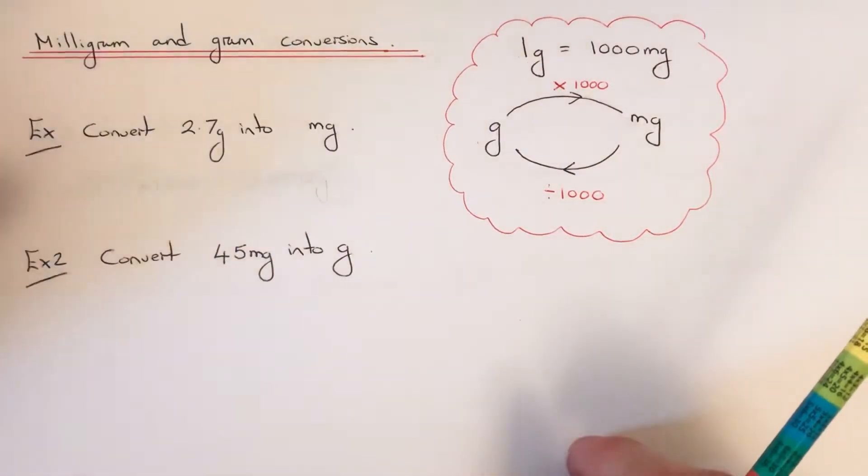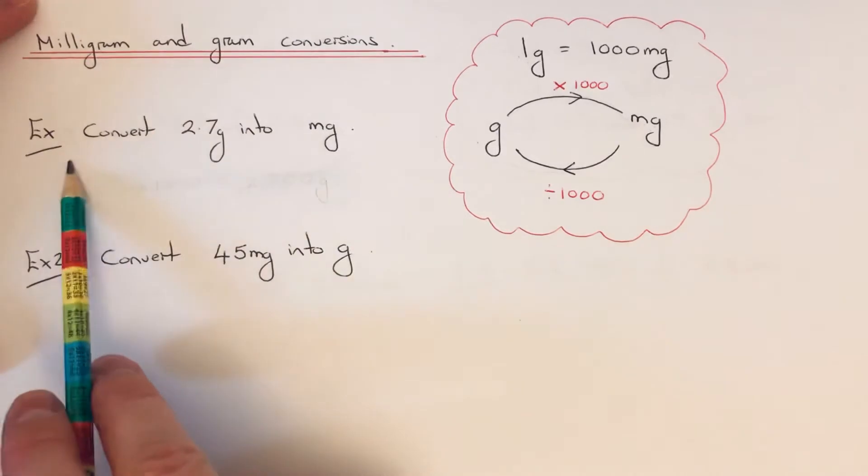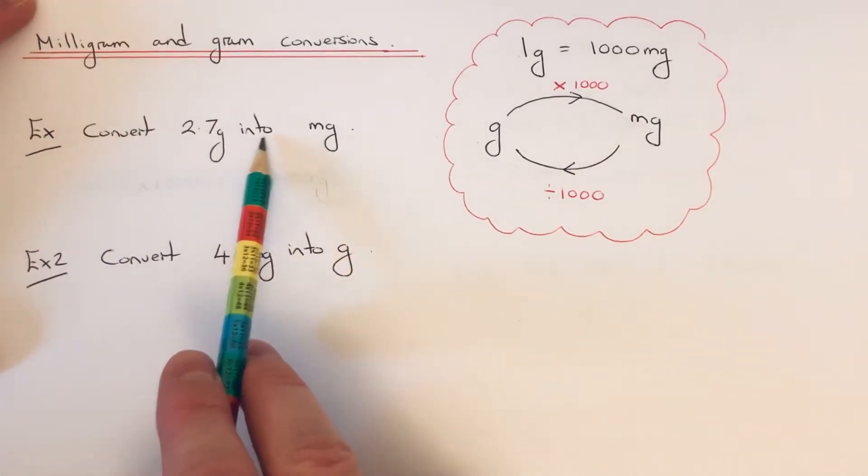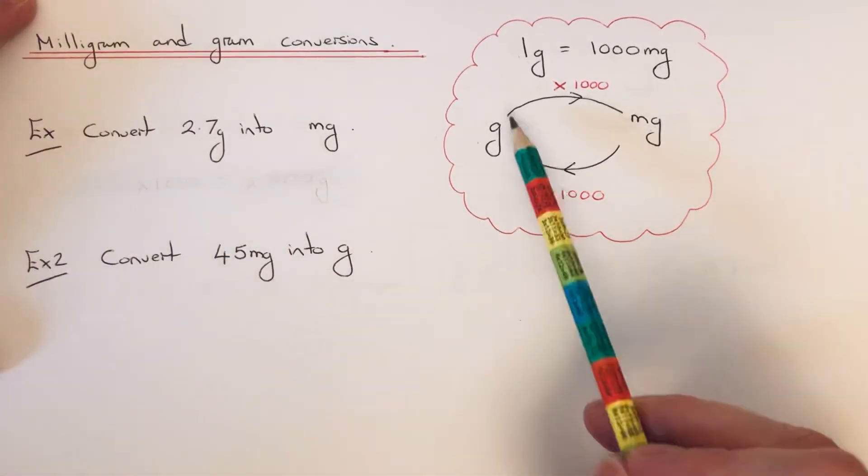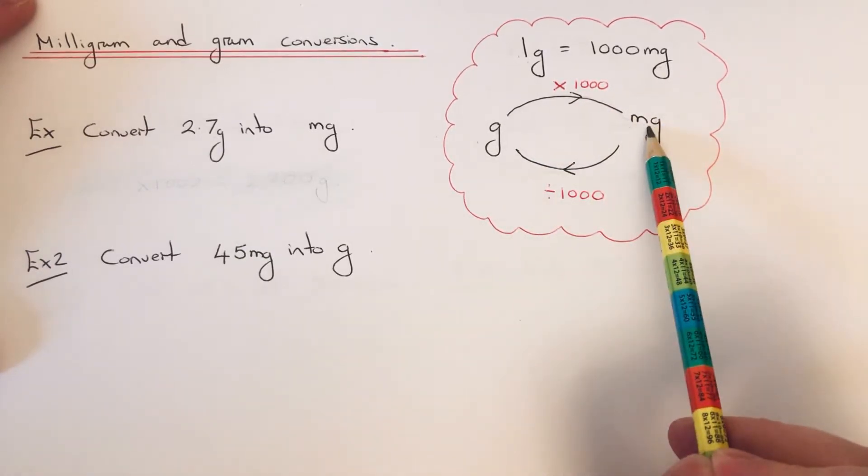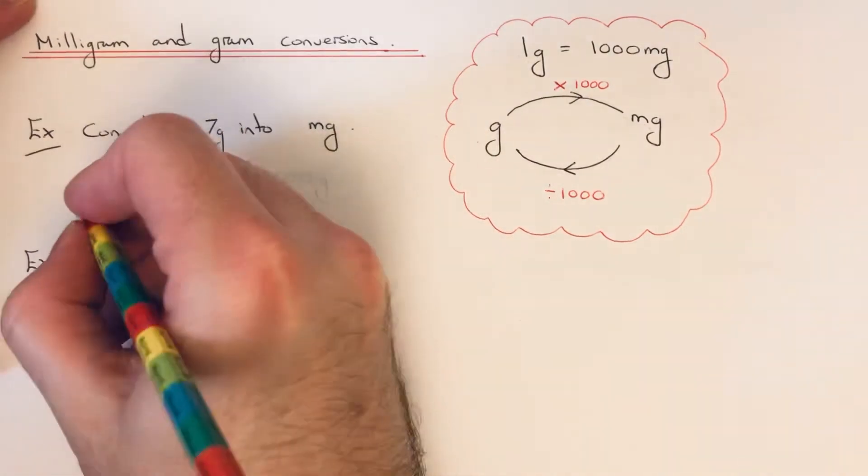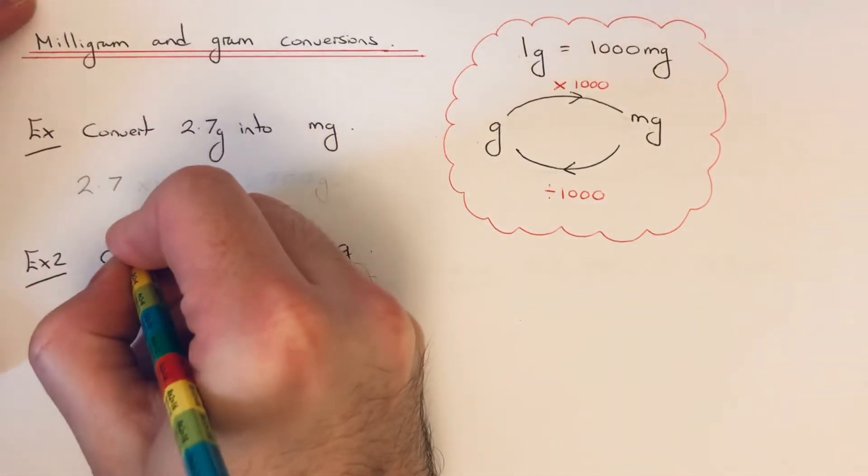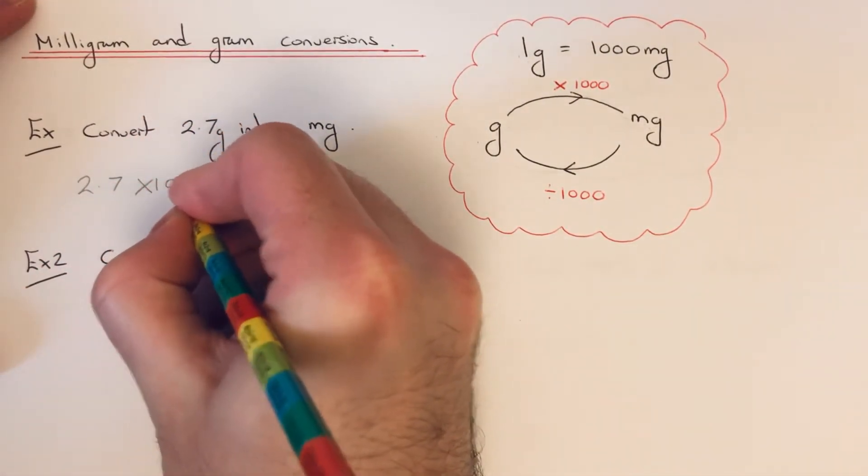Let's have a look at the two examples here. We've got to convert 2.7 grams into milligrams. So grams to milligrams, we multiply by a thousand. If you write your 2.7 down first, we've got to times that by 1000.